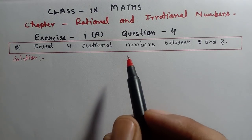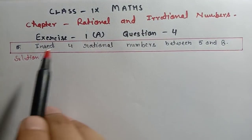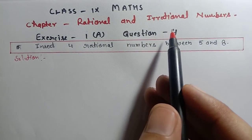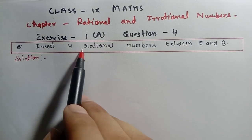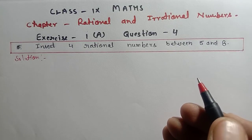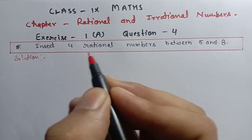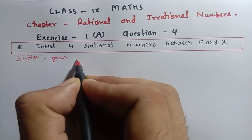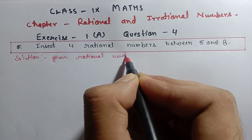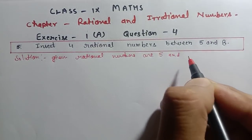Hello students, welcome to this channel. I'm your math teacher. Today in Class 9 Maths, ICSE Board, Chapter 1 Rational and Irrational Numbers, Exercise 1E, Question 4: Insert 4 rational numbers between 5 and 8. So let's solve this. The given rational numbers are 5 and 8.